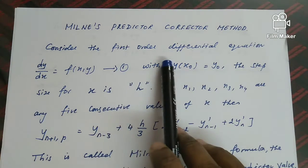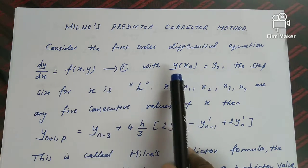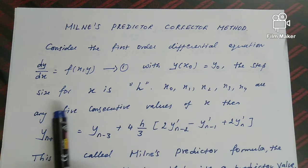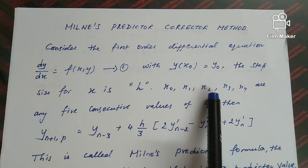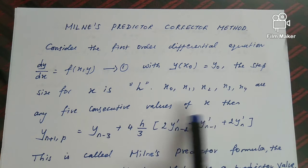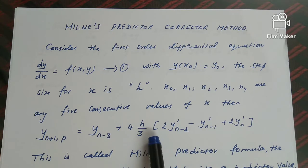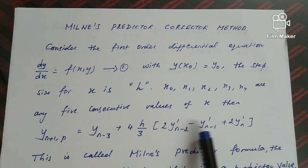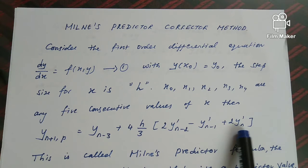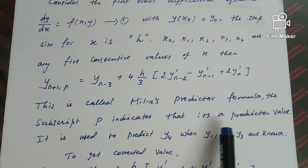Consider the first order differential equation dy/dx equal to f(x, y) with y(x₀) = y₀. The step size for x is h, with five consecutive values x₀, x₁, x₂, x₃, x₄. Then the predictor formula is: y(n+1,p) = y(n-3) + (4h/3)[2y'(n-2) - y'(n-1) + 2y'(n)]. This is called Milne's predictor formula, where the subscript p indicates it is a predictor value.